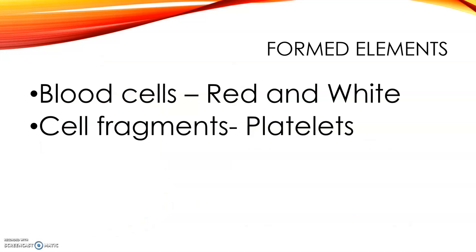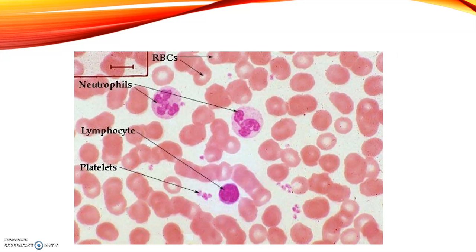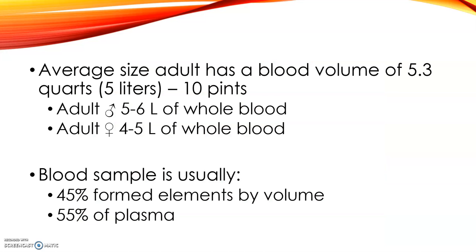The formed elements make up about 45% of the blood. We have red and white blood cells and blood platelets. The red blood cells are red, platelets are little slivers of cells, and there are five main types of white blood cells. The blood volume of an average adult is roughly about 10 pints — females have four to five liters and males have five to six liters.